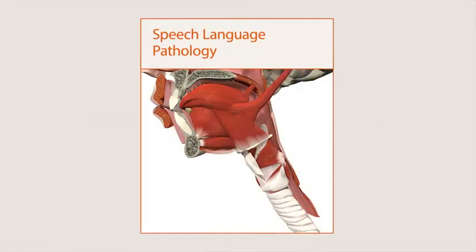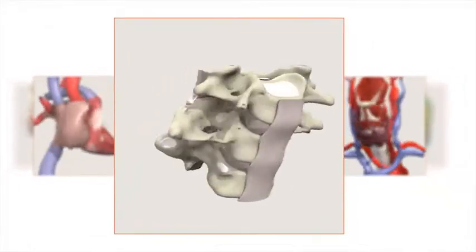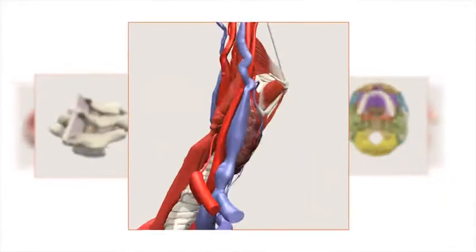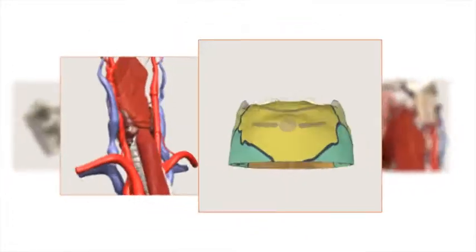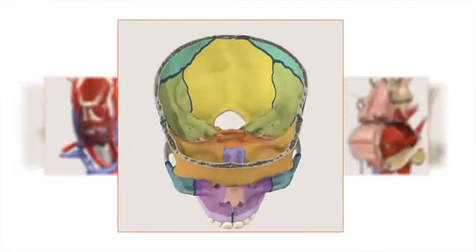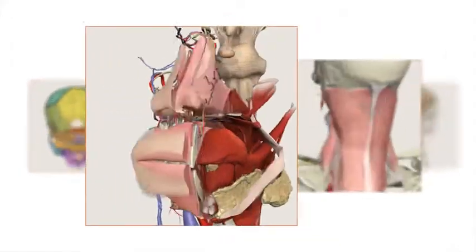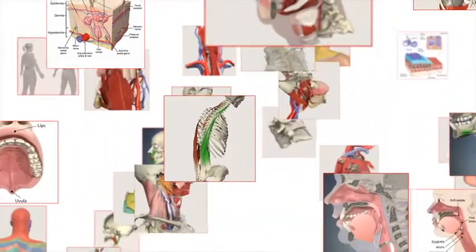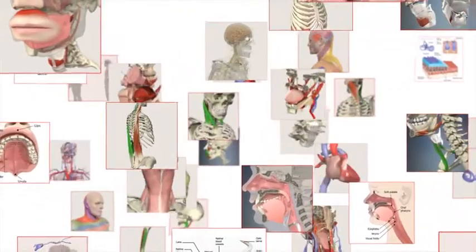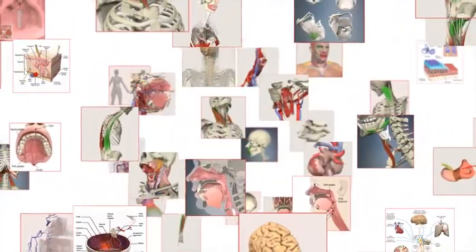Human Anatomy for Speech-Language Pathology features a comprehensive selection of 3D views covering key body systems and visually stunning head and neck views. This resource is complemented by a wealth of multimedia clinical content that is sure to enhance teaching, learning and patient care.